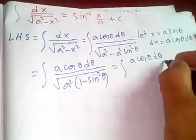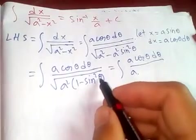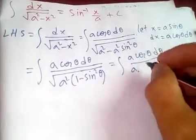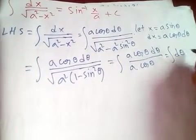Square root of a squared is a, and one minus sine squared theta is cos squared theta. So square root of cos squared theta is cos theta. The cos thetas cancel, and you get integral of d theta.